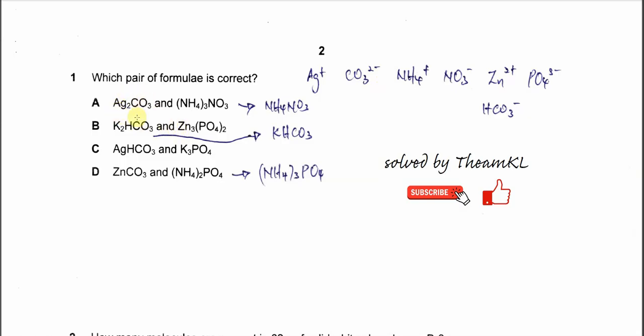For the silver carbonate, this is correct. Follow the charge of the species. For ammonium nitrate, this one is wrong because the charge of nitrate is just negative, not three negative. Therefore, this is wrong and not the correct pair. The correct formula is ammonium nitrate.